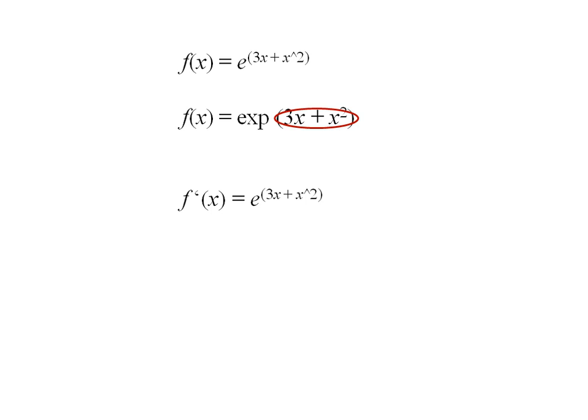The derivative of 3x + x² is 3 + 2x. I take that and multiply it by my original function. We can rearrange this to the more standard form: (3 + 2x)e^(3x + x²).